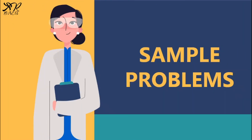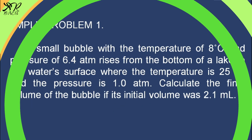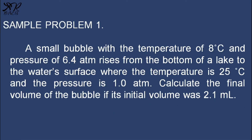Since we already know the different formulas that we can use, let us apply the combined gas law in solving the following problems. Sample problem number 1: A small bubble with a temperature of 8 degrees Celsius and pressure of 6.4 atmospheres rises from the bottom of a lake to the water's surface where the temperature is 25 degrees Celsius and the pressure is 1 atmosphere. Calculate the final volume of the bubble if its initial volume was 2.1 milliliters.